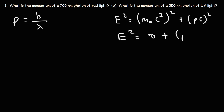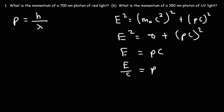So we get this simplified form. If we take the square root of both sides, we get that the energy of a photon is equal to the momentum times the speed of light. Dividing both sides by c, we get that E over c is equal to the momentum. Now E is equal to hf — Planck's constant times the frequency.